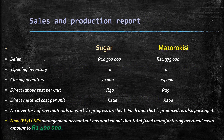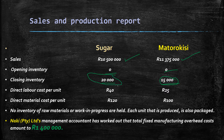Our sales and production report gave us the following information. Sales amounted to the highlighted amounts for both products respectively. Importantly, there was no opening inventory, and closing inventory is 20,000 units for Sugar Jeans and 15,000 units for Maturikisi. These are the units that were not sold by year end. We also have our direct labor cost per unit and direct material per unit given in the question.